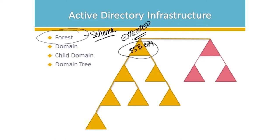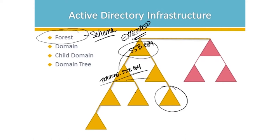Let's say we need more security boundaries — we want an entire area of the organization dedicated to training. You might create a child domain called training.sjb.com. What these two share is something called a namespace, which is sjb.com, and they also share something called a trust relationship. So training would be known as a child domain. Domains can be named based on organization — training, consulting, sales — or based on geographic preference, like North America versus South America. A domain tree is a collection of domains that share a common namespace.